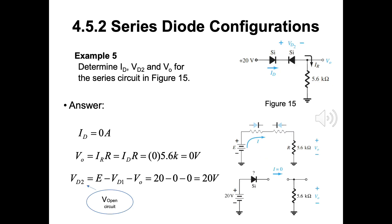Example 5, determine ID, VD2 and V0 for the series circuit in figure 15. The combination of a short circuit in series with an open circuit always results in an open circuit and ID equal to 0A. V0 also became 0V. As an open circuit, VD2 will have the equivalent voltage as 20V.